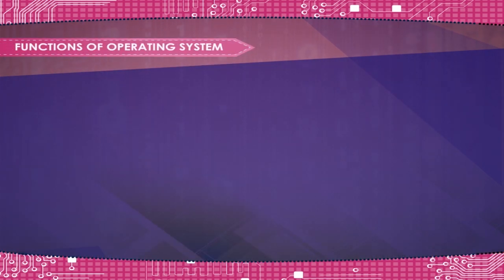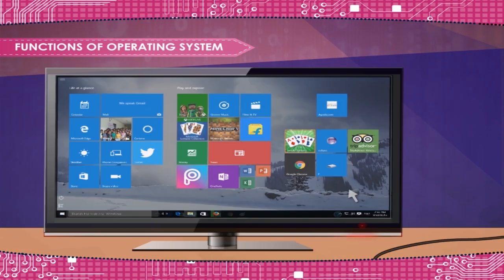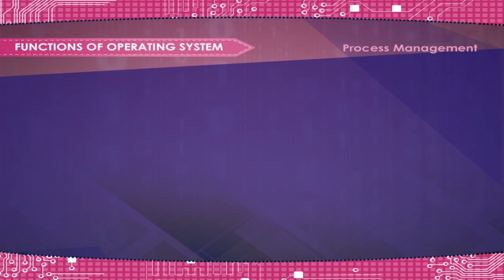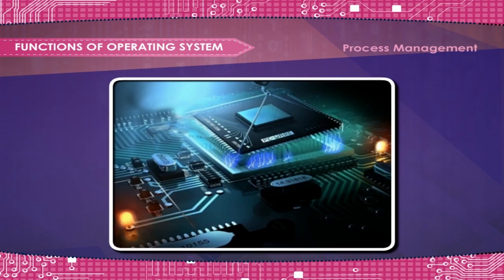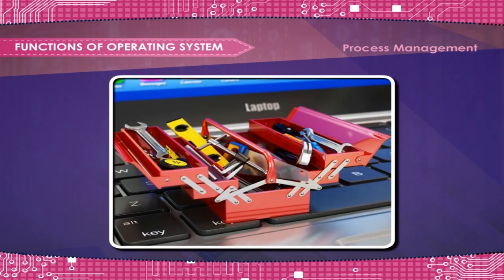Functions of Operating System. The main functions of an Operating System are: Process Management — the process management takes care of the creation and deletion of processes, scheduling of various system resources, and providing mechanisms for synchronization and communication among processes.